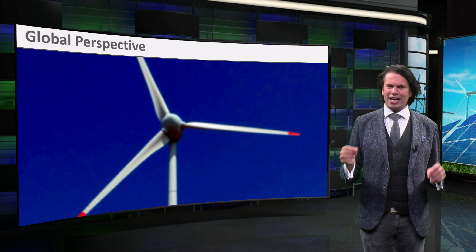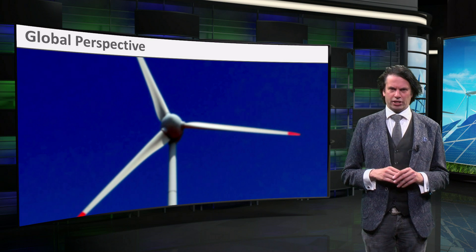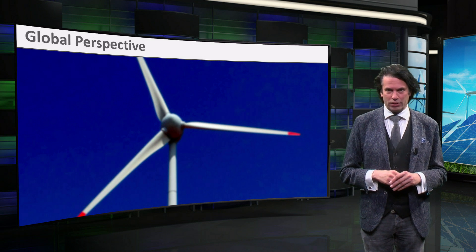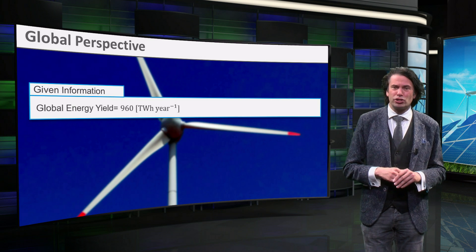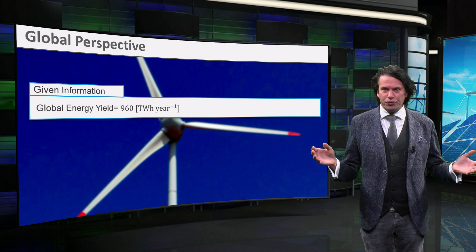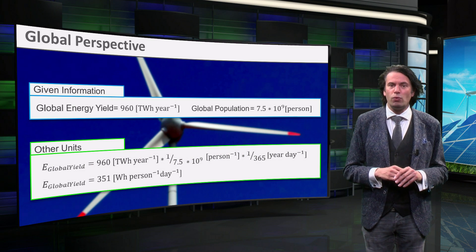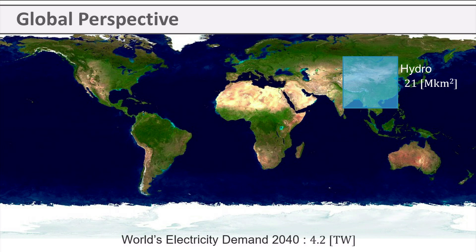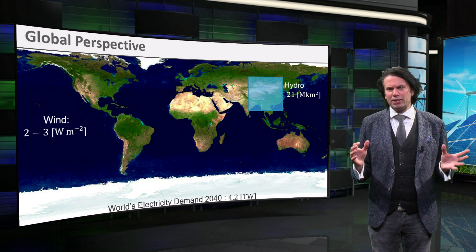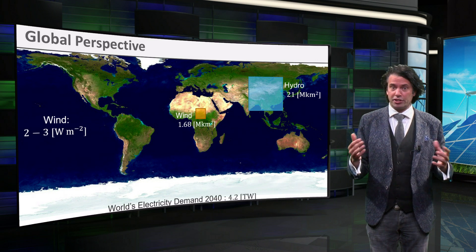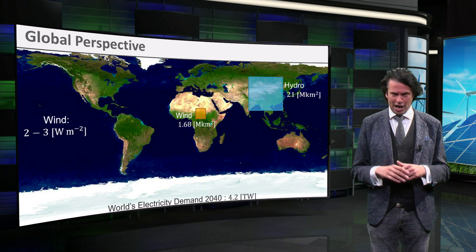Finally, let's take a quick look into the global status of wind energy. In 2016 the global nominal capacity was around 486 GW, producing 960 TWh of electricity. If we take a world population of 7.5 billion, we get 351 Wh per person per day. In terms of average power, wind energy has a surface power density of 2–3 W per square meters. On our map used in the previous lecture, we can see we need a much smaller area to power the world's electricity demand with wind energy than with hydropower.